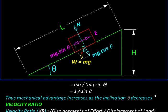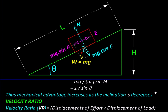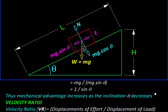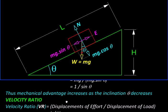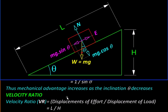And velocity ratio is the price we pay for the mechanical advantage we get, that we are getting convenience in force but we are going to lose something in terms of speed. If we are overcoming a large load with a smaller force, the load will move slowly.